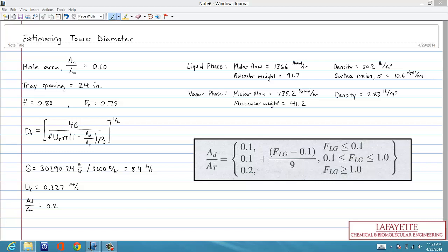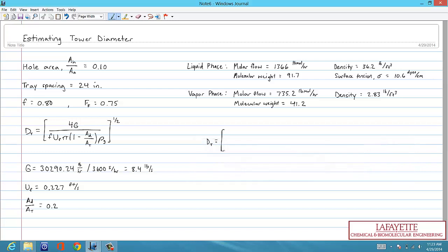With our vapor density given, we now have everything we need to calculate the tower diameter. We must remember, however, to convert the vapor mass flow to pounds per second so that all units align. Plugging in all of our calculated and given parameters results in a tower diameter of 5.1 feet.